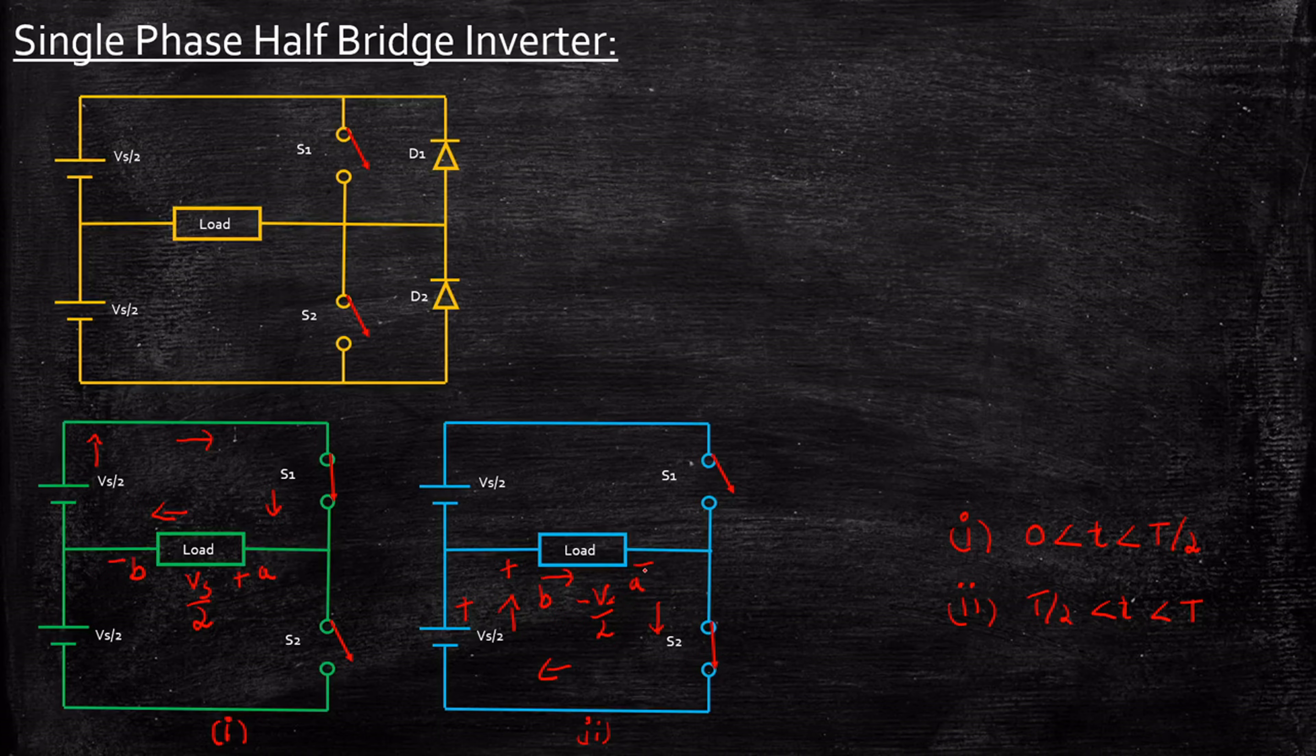So our load, A with respect to B—if we consider the output voltage, it is minus Vs/2, because you have minus here and plus here. You're always measuring the output voltage from A to B. That's why you were getting Vs/2 here and minus Vs/2 here.